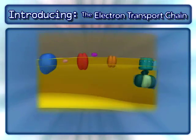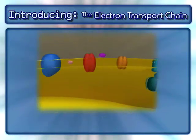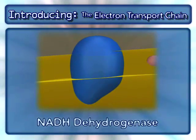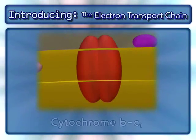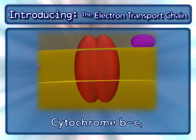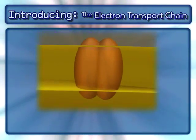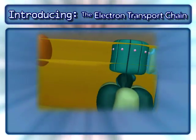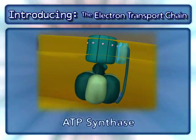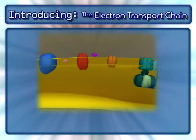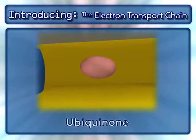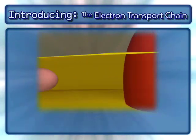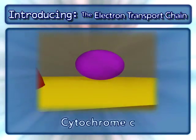The following complexes are found in the electron transport chain: NADH dehydrogenase, cytochrome BC1, cytochrome oxidase, and the complex that makes ATP — ATP synthase. In addition to these complexes, two mobile carriers are also involved: ubiquinone and cytochrome C.